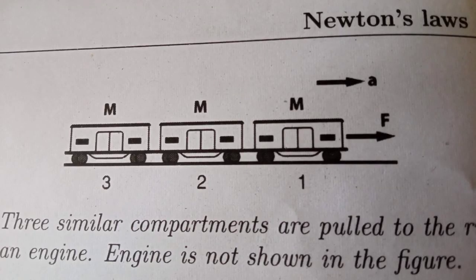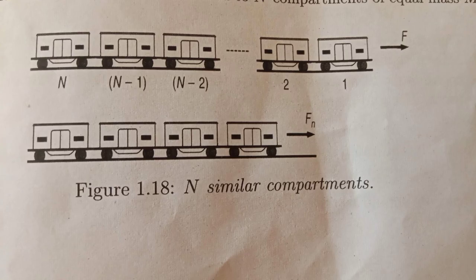We can now find the force in all three compartments: in the first compartment it is F by 3, in the second compartment it is 2F by 3, and in the third compartment it is 3F by 3. We can generalize this: in the first compartment F by N, in the second compartment 2F by N, and in the third compartment 3F by N.